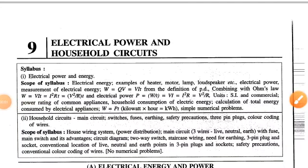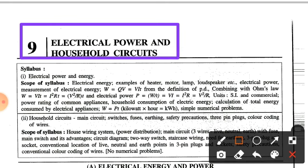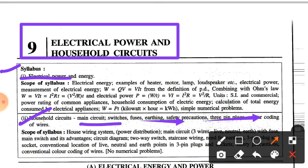Hello students, welcome to today's session of physics. We are covering chapter number nine: electrical power and household circuits. The topics in this chapter include electrical power and energy, household circuits, main circuit switches, fuses, earthing, safety precautions, three-pin plugs, and color codings of wires.